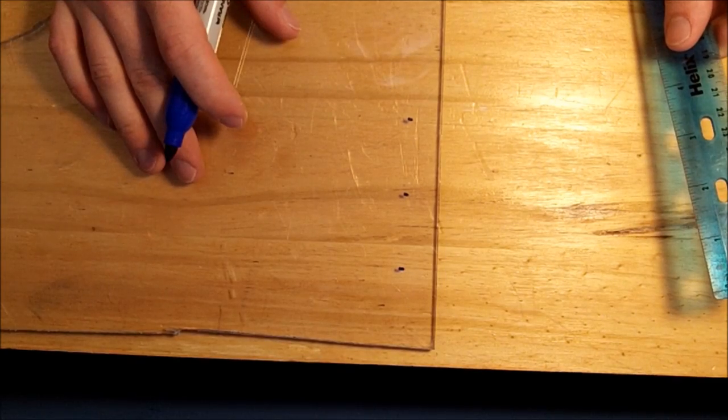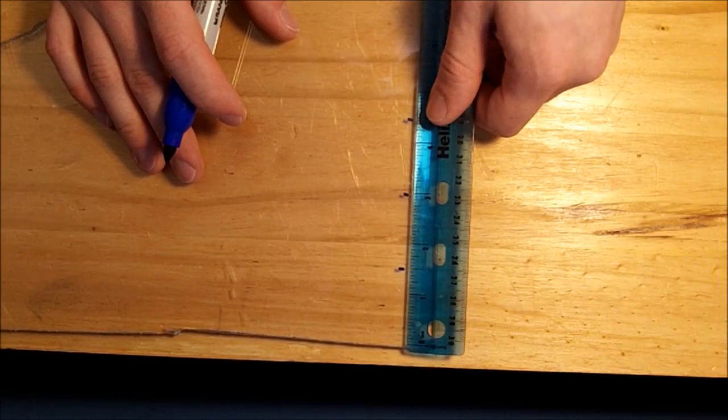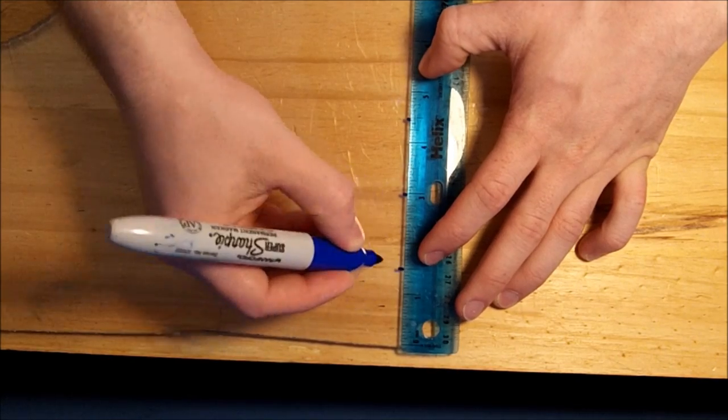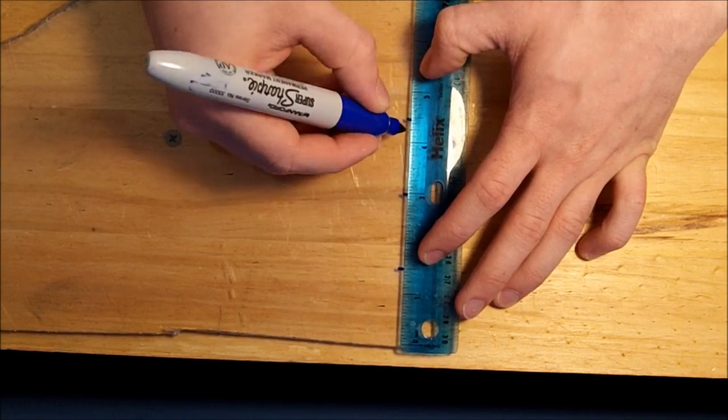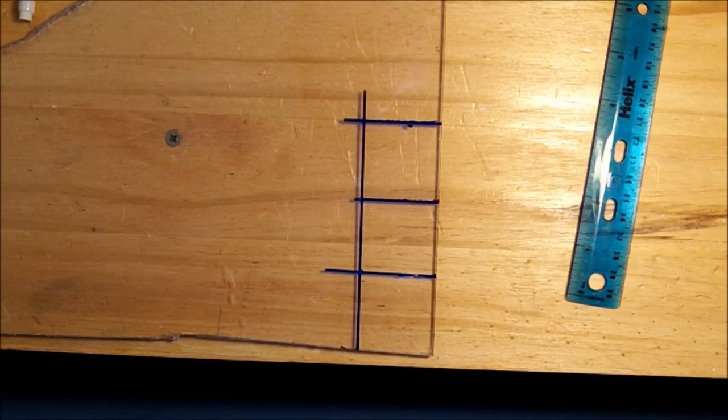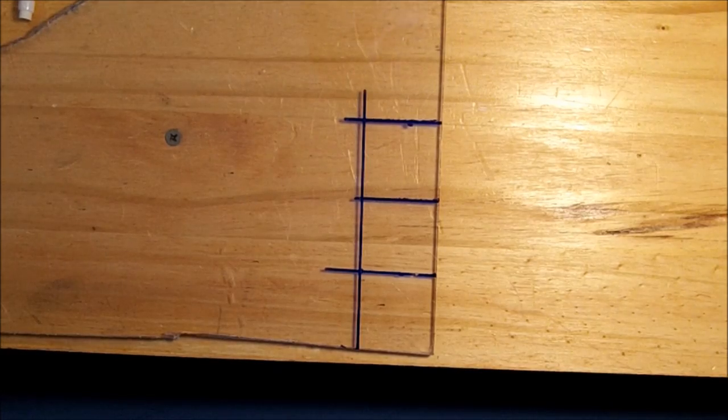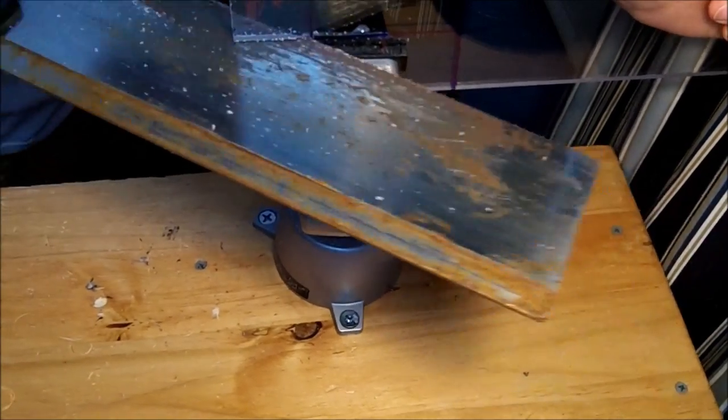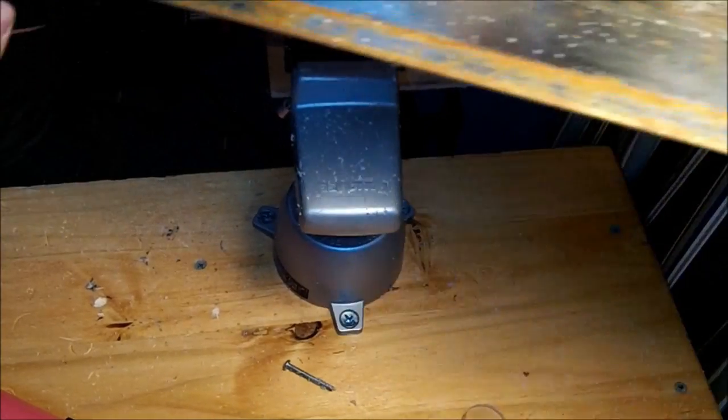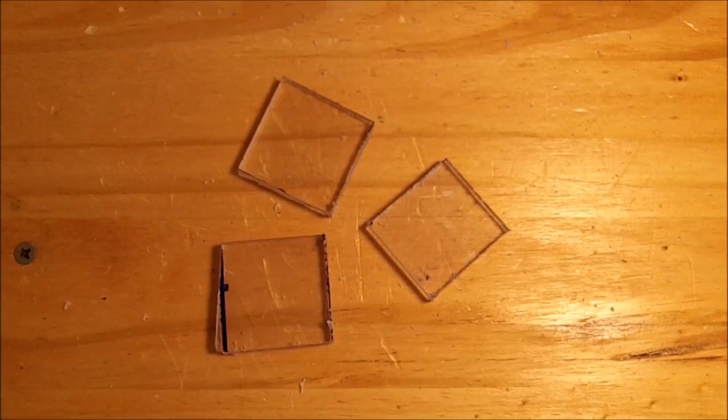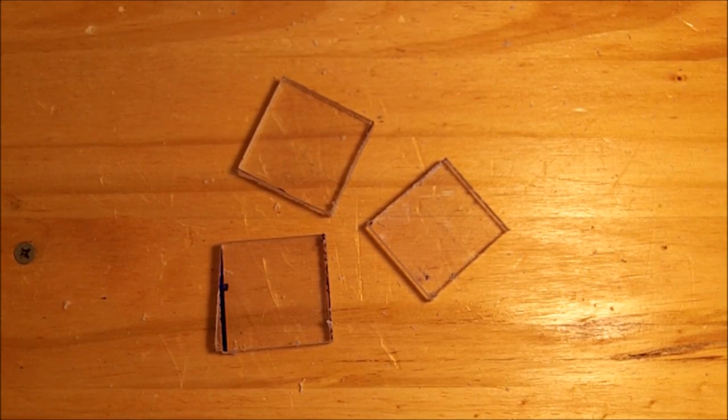Using some polycarbonate, cut out squares that are an inch and a half on each side. They don't need to be perfect as we'll be cutting them out right now.